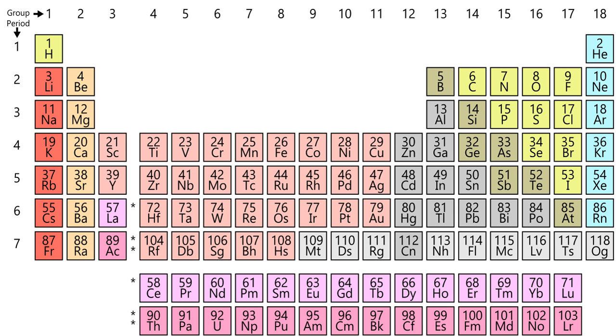In older nomenclature the main group elements are groups IIA and IIA, and groups IIIB to 0. Group 12 is labeled as group IIB in both systems. Group 3 is labeled as group IIIA in the older nomenclature.